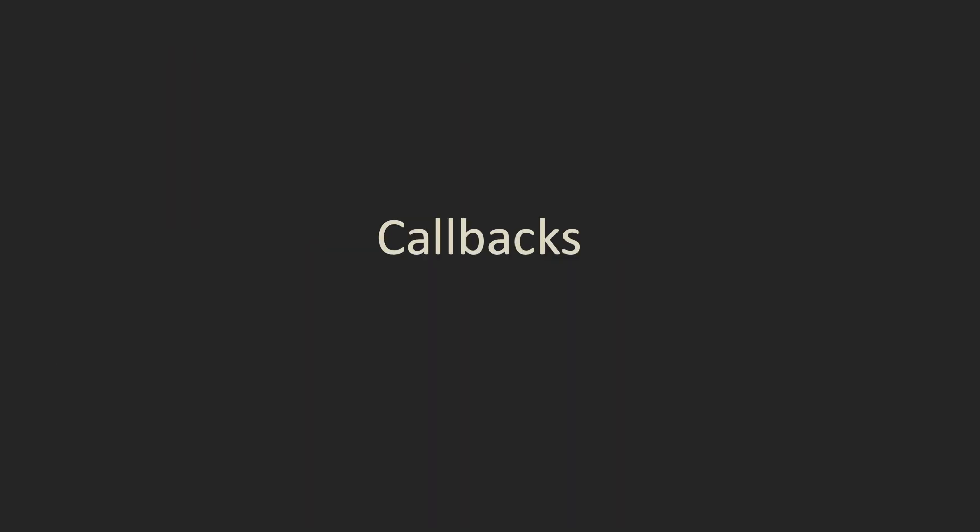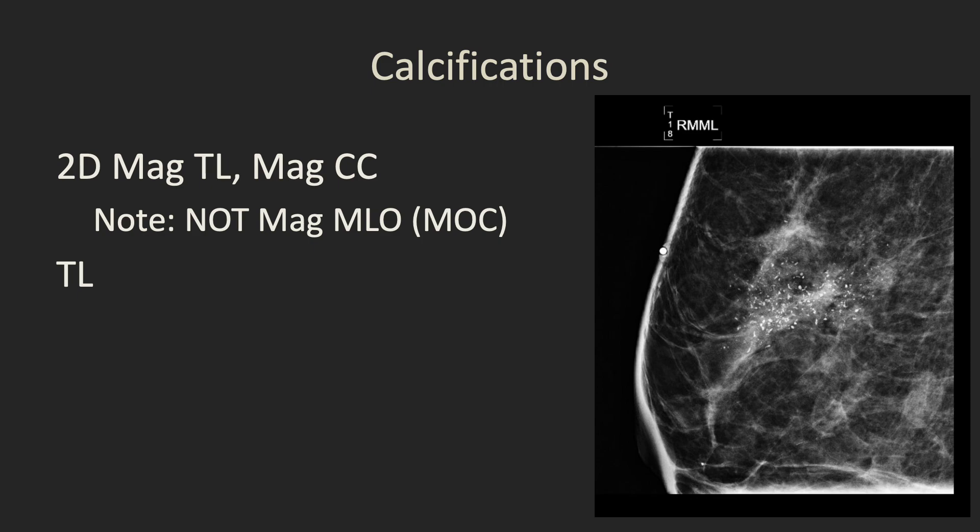Let's start by looking at callbacks, beginning with calcifications. The standard additional views for calcifications are a 2D MAG true lateral view and a MAG CC. Whether you do a medial lateral or lateral medial depends on where the calcifications are — generally you want to place the calcifications against the image receptor, so for lateral calcifications you want a medial lateral for best resolution. Note you don't want to do MAG MLOs, because you cannot usually make the diagnosis of milk of calcium on an MLO MAG — you need a true lateral MAG for that. We also usually obtain a 2D true lateral full field view, which is extremely useful for those ending up going for stereotactic biopsy for localization.